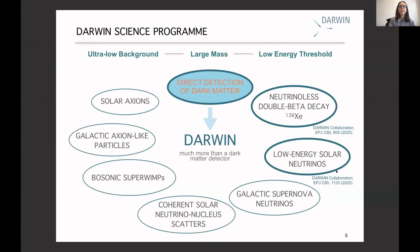Let me briefly mention the DARWIN science program. As I said, DARWIN will mainly be a dark matter detector, but it will also have a large mass of 50 tons, a very low background level, and a low energy threshold. This means DARWIN can study a huge variety of physics: neutrinos, double beta decay of Xe-136, solar neutrinos, coherent neutrino-nucleus scattering, and many other channels. In this talk I will focus on dark matter and two neutrino channels for which we have recently published papers.